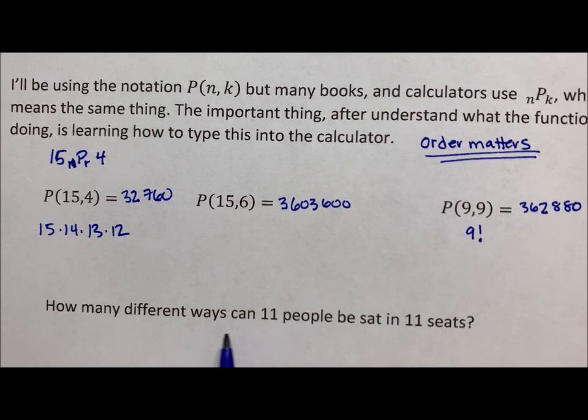Next, it says, how many different ways can 11 people be sat in 11 seats? Be seated? They should be seated. Well, if you're talking about sitting in seats, order matters because you care who you sit next to. So this is the permutation of 11 people sitting in 11 seats.